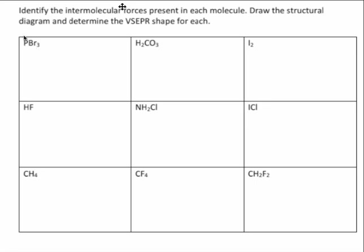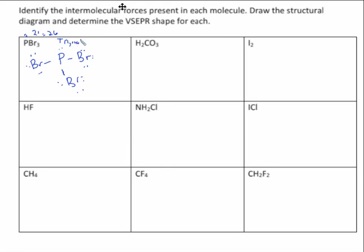So for PBr3: P has five valence electrons and Br has seven. You'll connect everything with a single bond and put the lone pairs on. Make sure everything has eight. If you count them up, that's 21 plus five, so it should have 26 electrons: 18, 20, 22, 24, 26. When you have one thing surrounded by three with a lone pair, that's trigonal pyramidal.